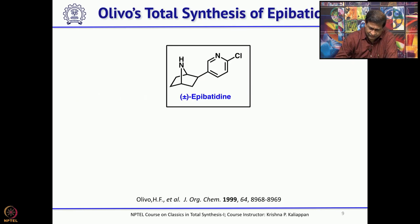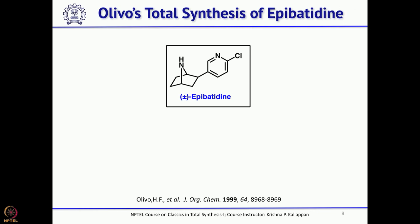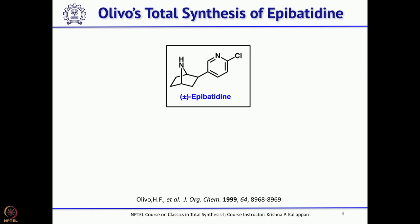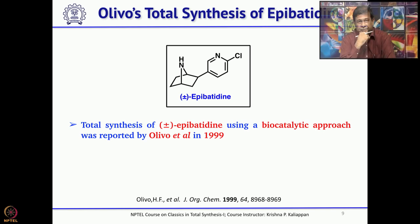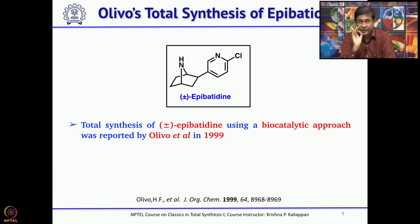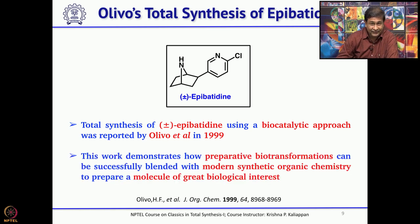Now we will move to the second total synthesis of epibatidine, reported by Olivo. What is important here was a very clever use of a biocatalyst to introduce a hydroxyl group. In those days, a biocatalytic approach to introduce a hydroxyl group, followed by attack of 2-chloropyridine, was the key step in the synthesis of epibatidine.